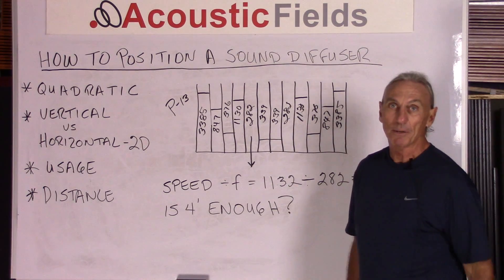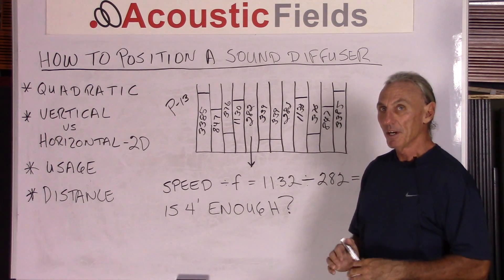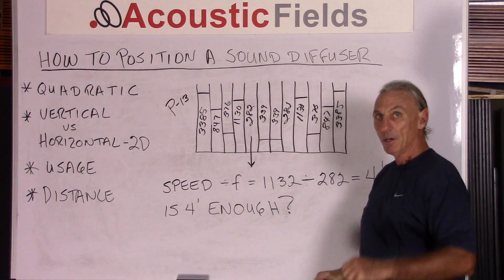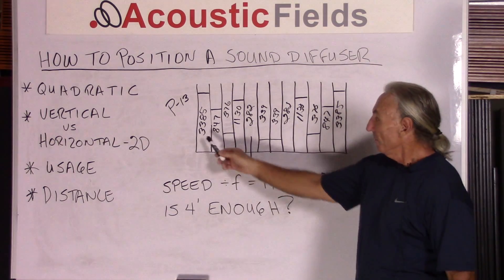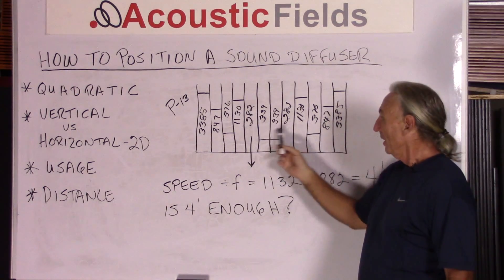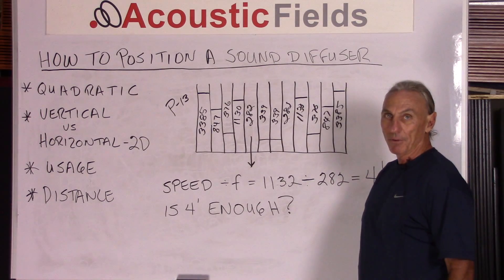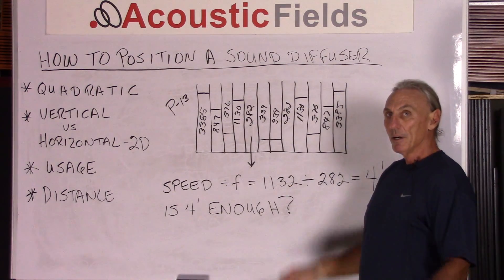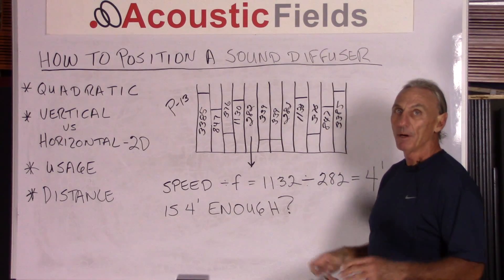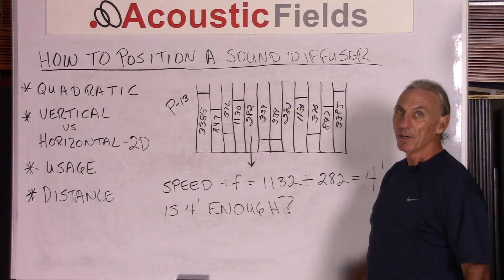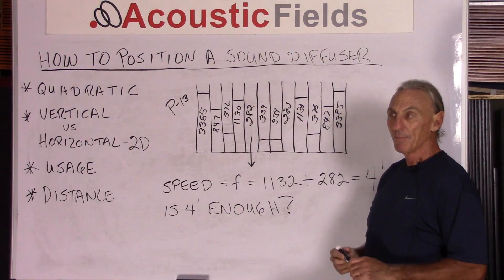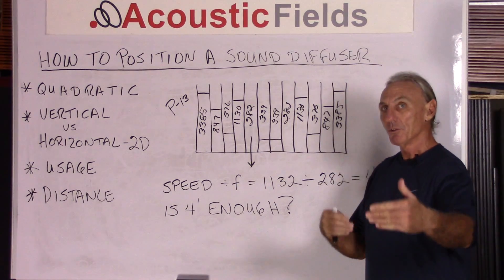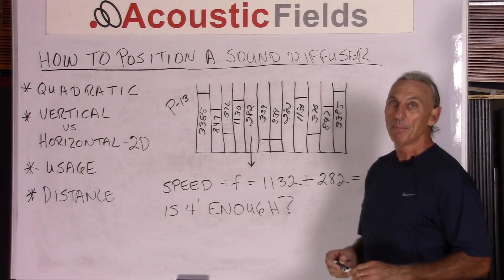Let's get to some basic rules about diffusion in terms of distances. Here's a prime 13 diffuser. Remember, it's prime 13, so it has 12 wells — always one well less than the prime number indicates. Breaking down the quarter-wavelength depths of the prime 13, we see that we have about 3,400 Hz as our high and 282 Hz as our low. This is the frequency we want to look at in order to determine the distance — how far from our listening position it should be. What's the lowest frequency the diffuser diffuses? That is the key factor.